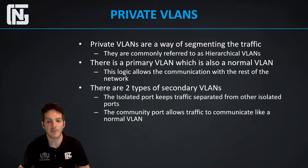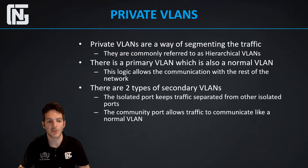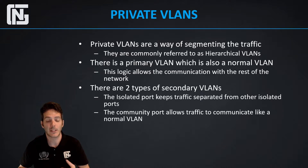There are two different types of secondary VLANs. First is the isolated VLAN — you place ports inside of that VLAN to keep traffic separated from other isolated ports. This is a one-to-one mapping. Second is the community VLAN — ports placed in that VLAN are allowed to communicate with each other just like a normal VLAN, but they are not allowed to communicate with isolated ports.